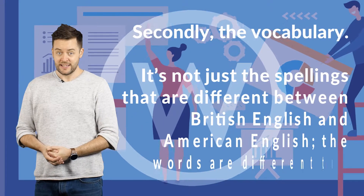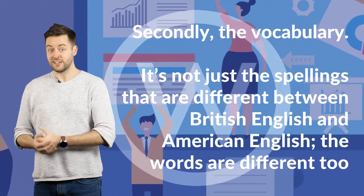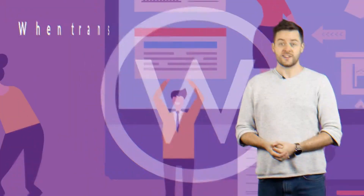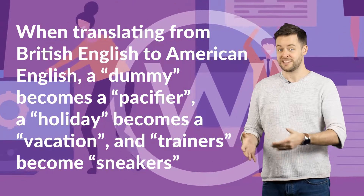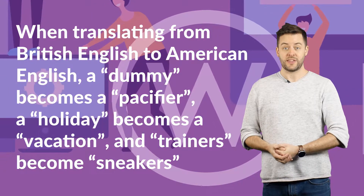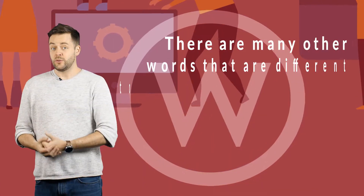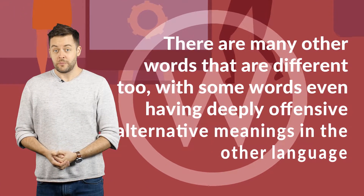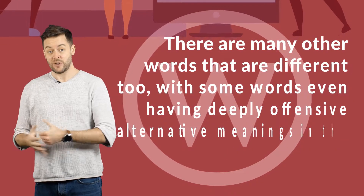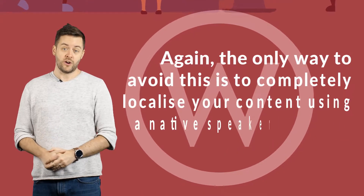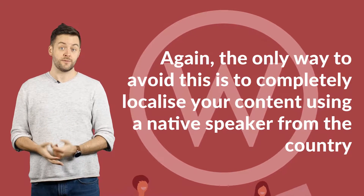Secondly, the vocabulary. It's not just the spellings that are different between British English and American English — the words are different too. When translating from British English to American English, a dummy becomes a pacifier, a holiday becomes a vacation, and trainers become sneakers. There are many other words that are different too, with some even having a deeply offensive alternative meaning in the other language. Again, the only way to avoid this is to completely localise your content using a native speaker from the country.